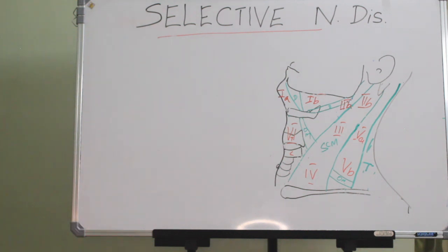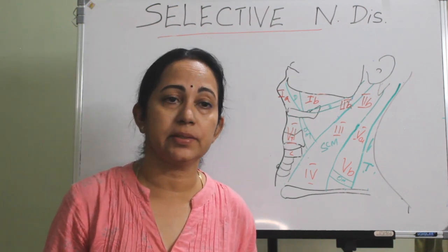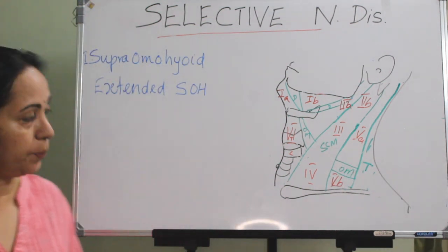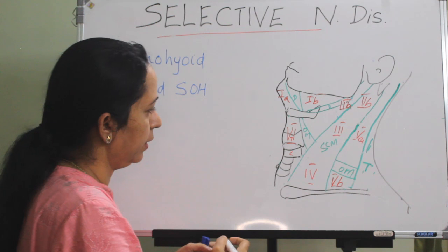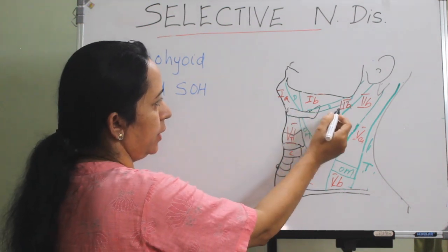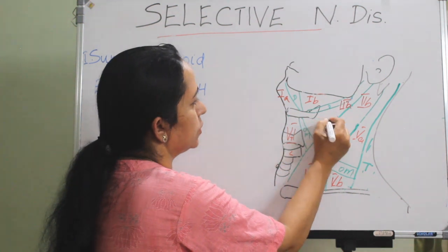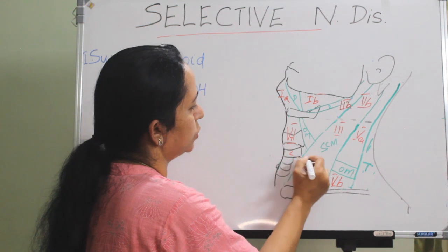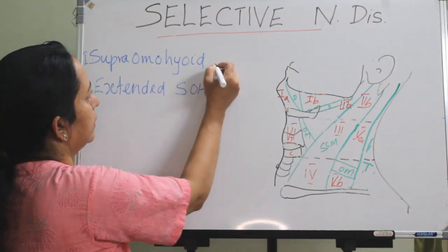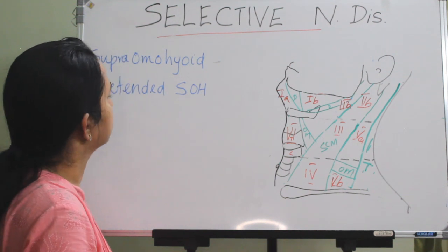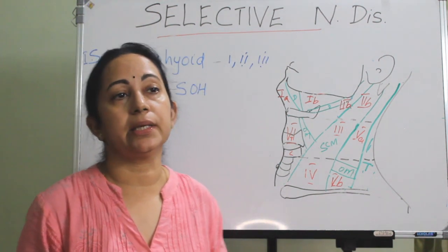Now, the types of selective neck dissection and their indications. The first is the supra-omohyoid, which covers levels 1, 2, and 3. The key landmarks are the lower border of the hyoid bone and the lower border of the cricoid cartilage. The main indication is T1 to T4 squamous carcinoma of the oral cavity with an N0 neck.